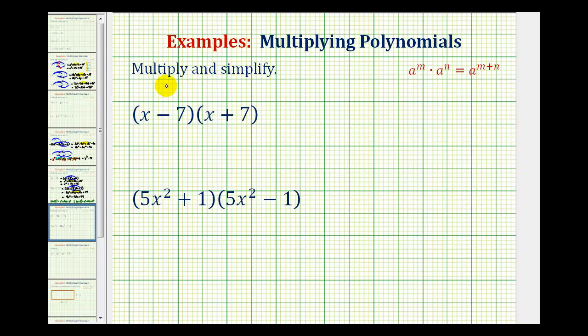So let's see what happens. Here we'll have four products: x times x, x times seven, negative seven times x, and then negative seven times positive seven.